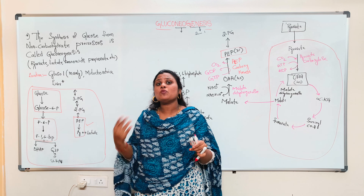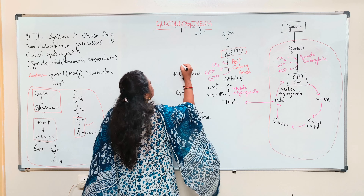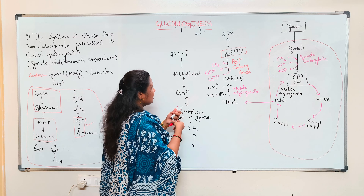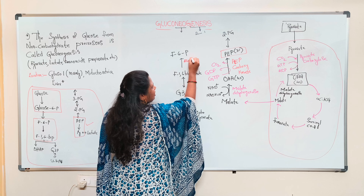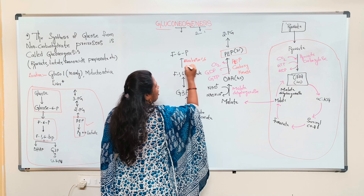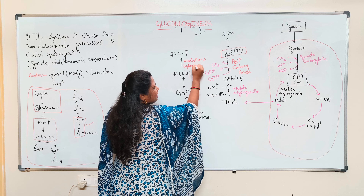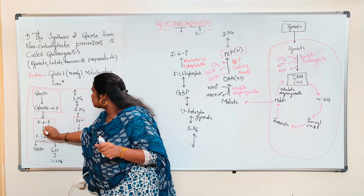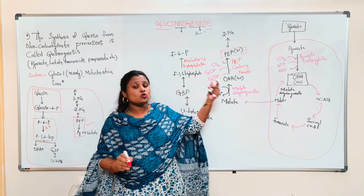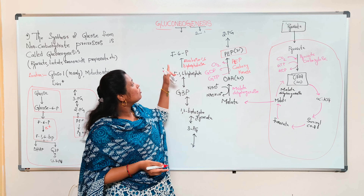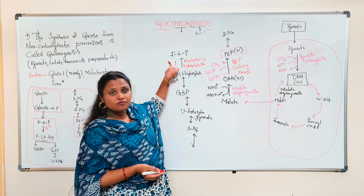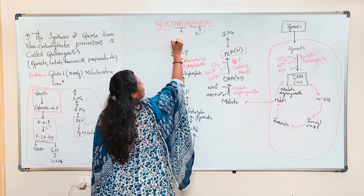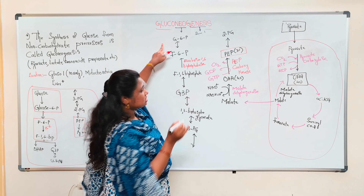Next comes our second irreversible step: the conversion of fructose-1,6-bisphosphate to fructose-6-phosphate. In glycolysis, phosphofructokinase performs the irreversible forward reaction. In gluconeogenesis, we use a different enzyme — fructose-1,6-bisphosphatase — which catalyzes the reverse reaction, converting fructose-1,6-bisphosphate to fructose-6-phosphate. Then a reversible step isomerizes fructose-6-phosphate to glucose-6-phosphate.